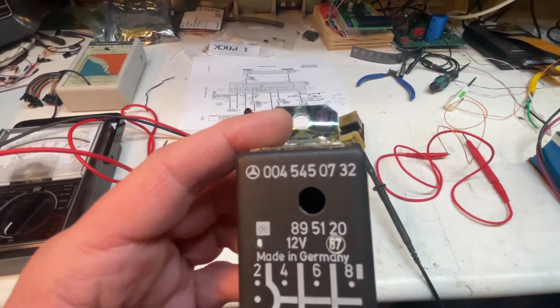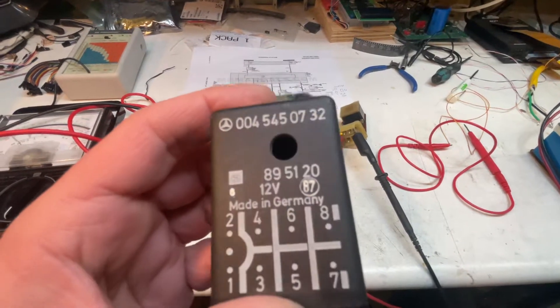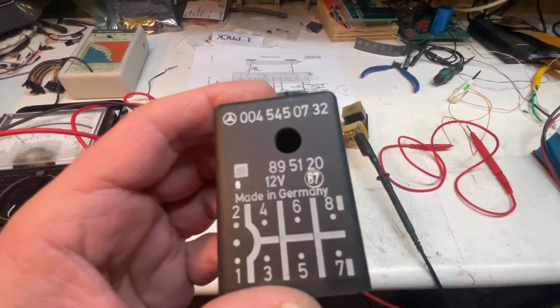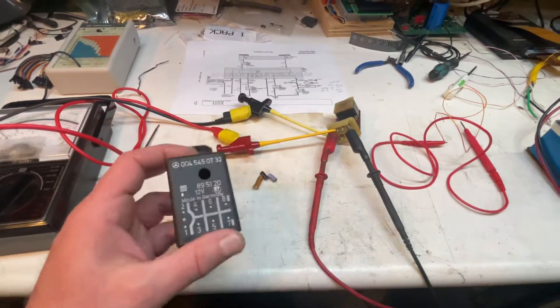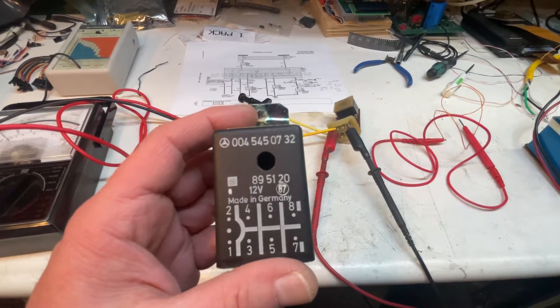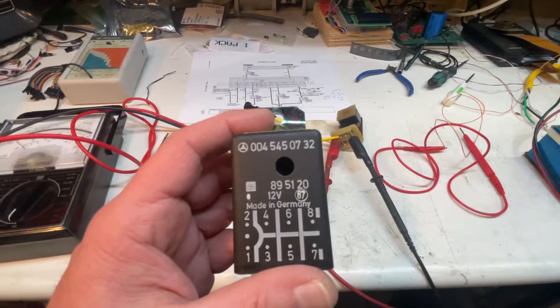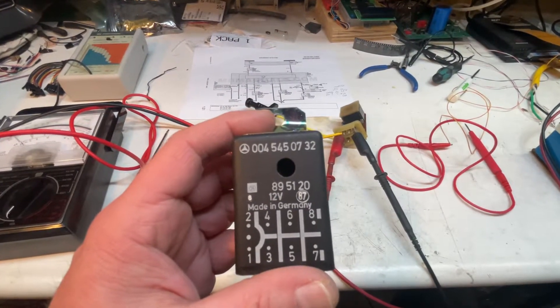This would be the part number 004-545-0732, mostly used on those cars. As you probably know, on a lot of those cars, that buzzer will buzz and buzz as soon as you put the key in the ignition. It won't stop until you put the seat belt on.